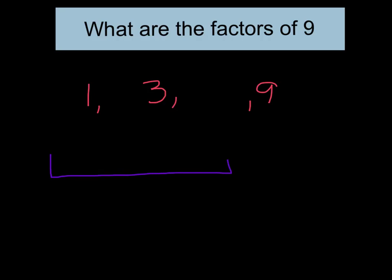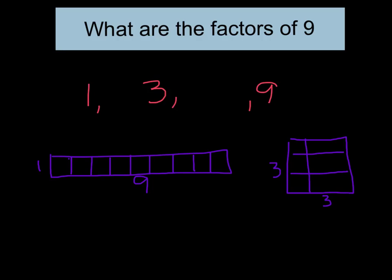If I were to draw models, you can make a rectangle of 1 by 9. I like to try to draw my rectangles to resemble what it would look like if there were to be units. For example, if this was 1 by 9, I should be able to fit 9 units, counting 1 through 9. And then 3 by 3, it should be a little bit longer like a perfect square because it's going to be 3 rows up, 3 rows across. So that's what it would look like as a model. So those are my factors of 9: 1, 3, and 9.